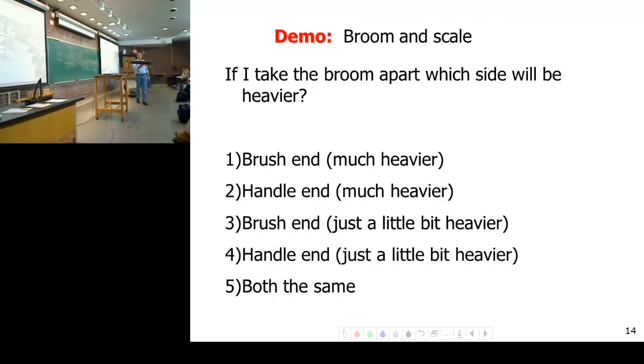I'm cheating because there's actually a line written on here already so I knew where it was going to be. So there's my balance point. The question is everything's nicely balanced. What does that tell me? Things are nice and symmetric and equal, right? Okay, so here's the question. If I take these two pieces apart and weigh them, what do I know? Will the brush end be much heavier, or will the handle end be much heavier? Will the brush end be just a little bit heavier, or will the handle end be just a little bit heavier?